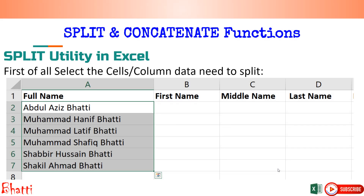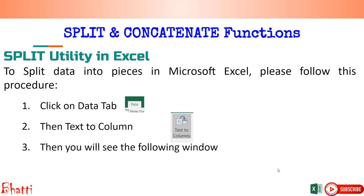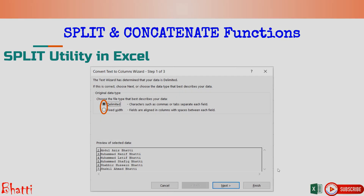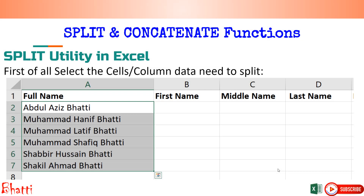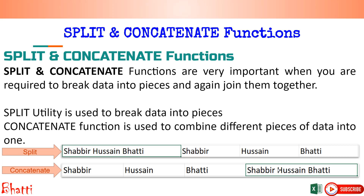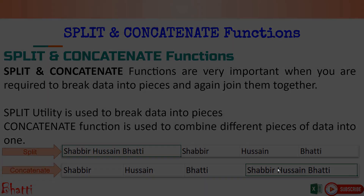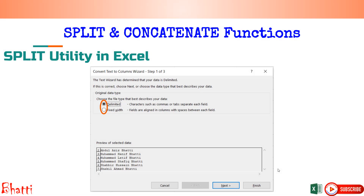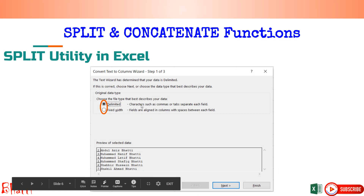For split, first of all we need to select the data. After that, click on the Data tab, then Text to Columns, and you will see a window to split the data into pieces. We need a criteria — in this case the criteria is a space, because there is a space between first name, middle name, and last name. Sometimes we find semicolons, sometimes commas, sometimes tab — the delimiter can be anything.